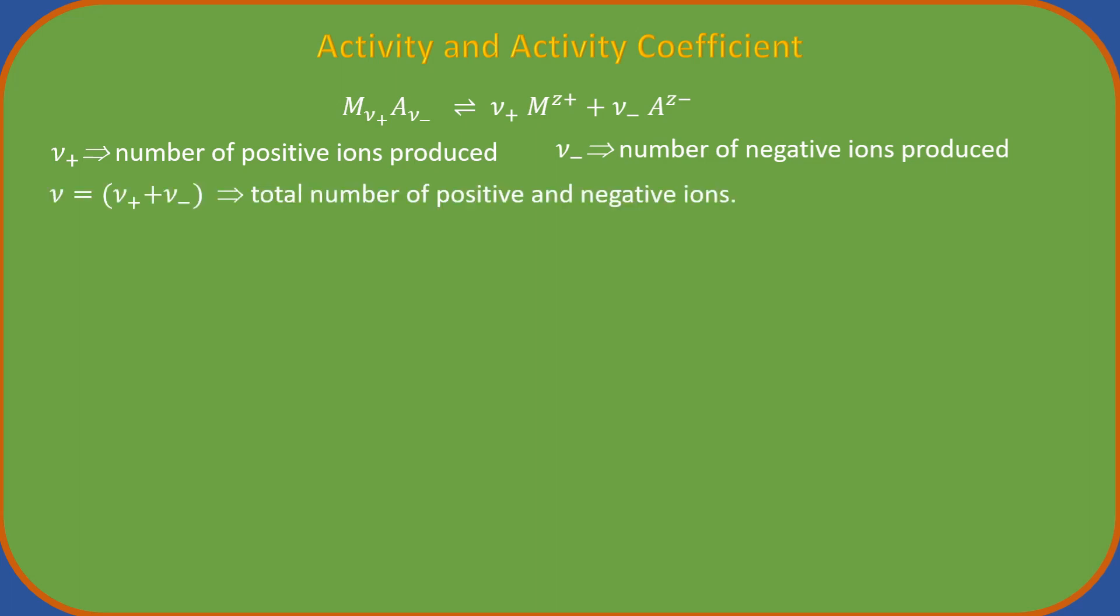Now, let us think about the ionization of an electrolyte which dissociates in the following manner producing positive and negative ions. Here nu plus is the number of positive ions produced and nu minus is the number of negative ions produced. Nu is the total number of ions generated. We now introduce the concept of ionic activities and ionic activity coefficients. We can write down the activity of undissociated electrolytes in terms of ionic activities.